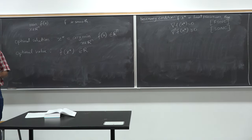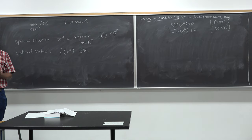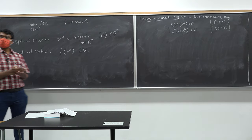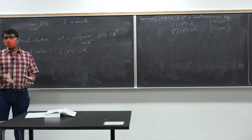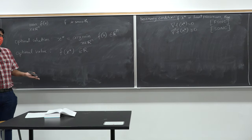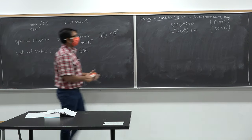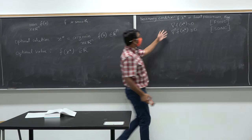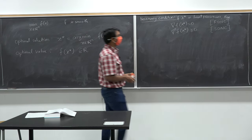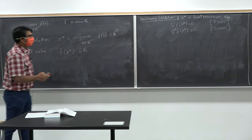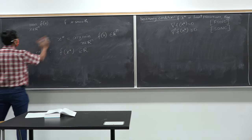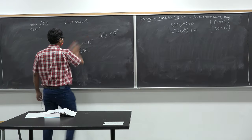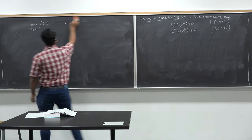Those are the necessary conditions for optimality. If a point is not optimal it will give you a certificate of that. If it is potentially optimal, it tells you there's a possibility — but it may not be optimal. We will go over the proof shortly, but let's first look at the necessary and sufficient conditions.